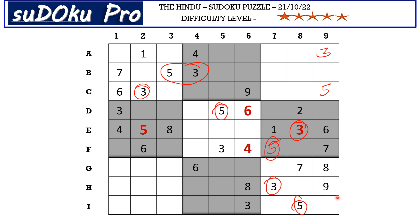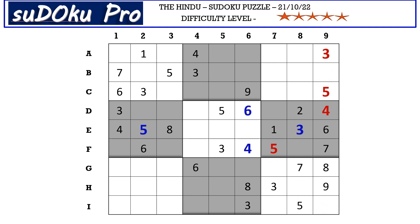Now in column nine there are only three empty cells and the missing numbers are one, two, and four. We have one and two blocking here, so D9 takes four. One and two go in these two cells — we do not have clues for one and two across these two rows, so let's keep in mind that one and two go in these two cells.